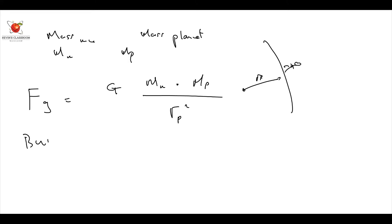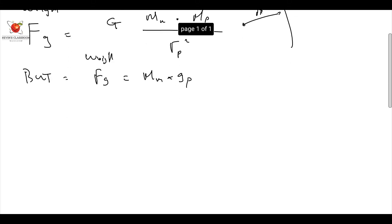But we also know that FG is equal to, this is my weight, this is also my weight, is mass of me times G, G on the specific planet. Therefore, the two must be equal to each other.